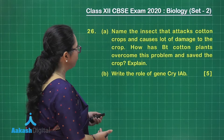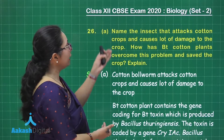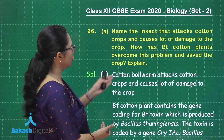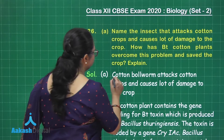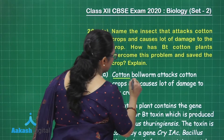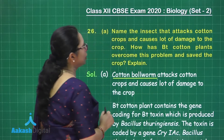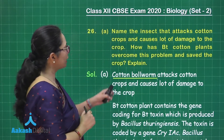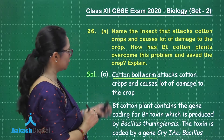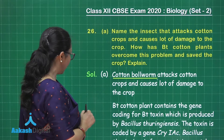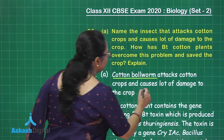For part A, the insect that attacks cotton crops and causes a lot of damage is the cotton bollworm. This answer is worth one mark.